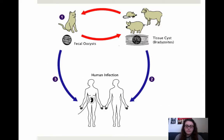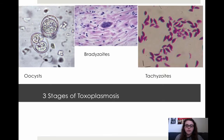The fecal oocytes will come from the cat, and then they can either directly infect humans, or they can infect an animal, which then indirectly will infect a human. These are the three stages of toxoplasmosis. As you can see, we have the oocytes, which are where the original infection comes from, from cats.